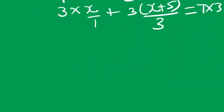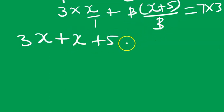Let's just move on friends. Here we will have 3x plus this 3 will divide this 3. Then here we will have x plus 5, this equals to 21.